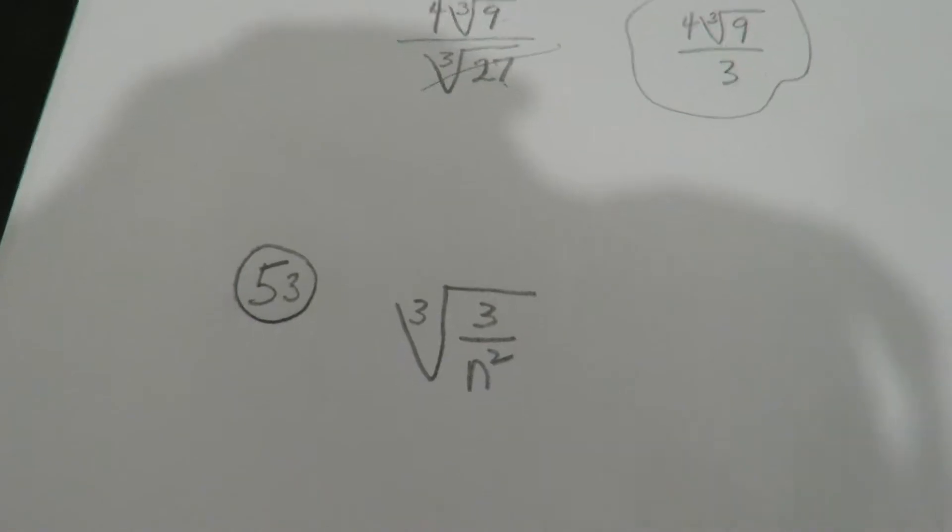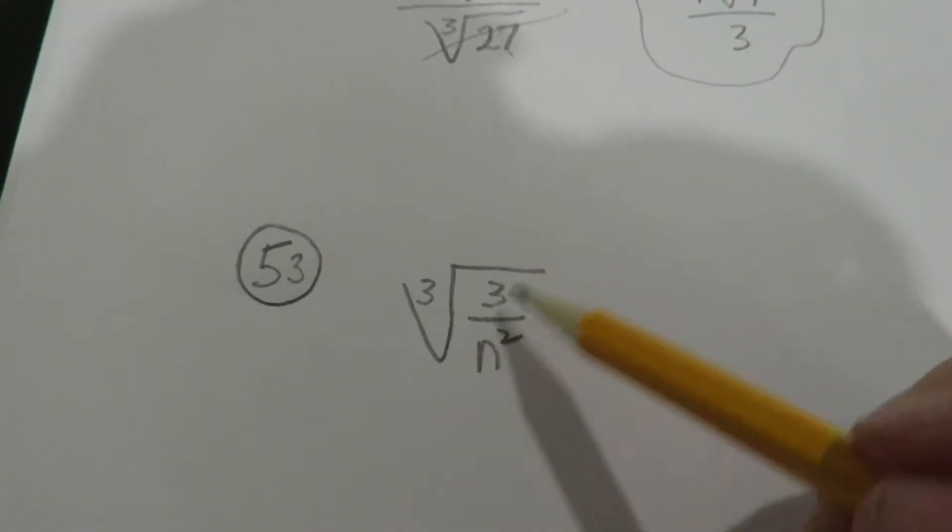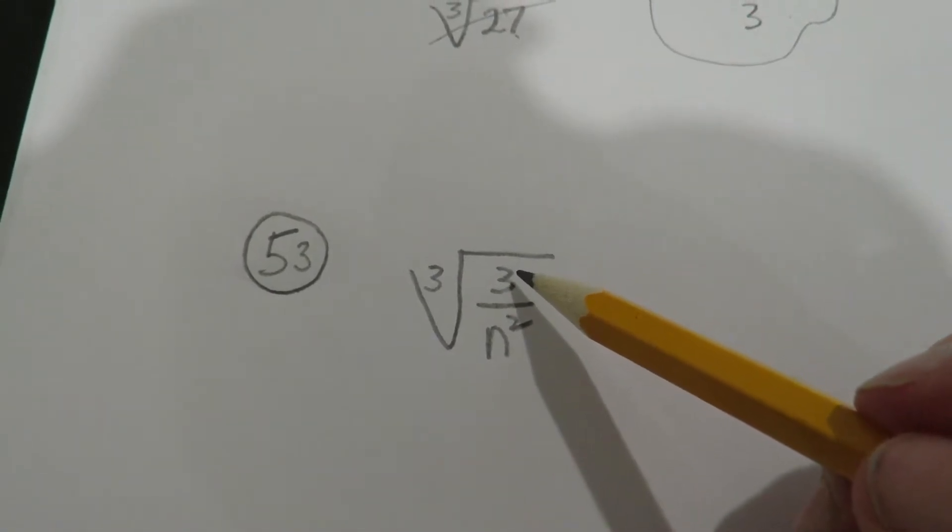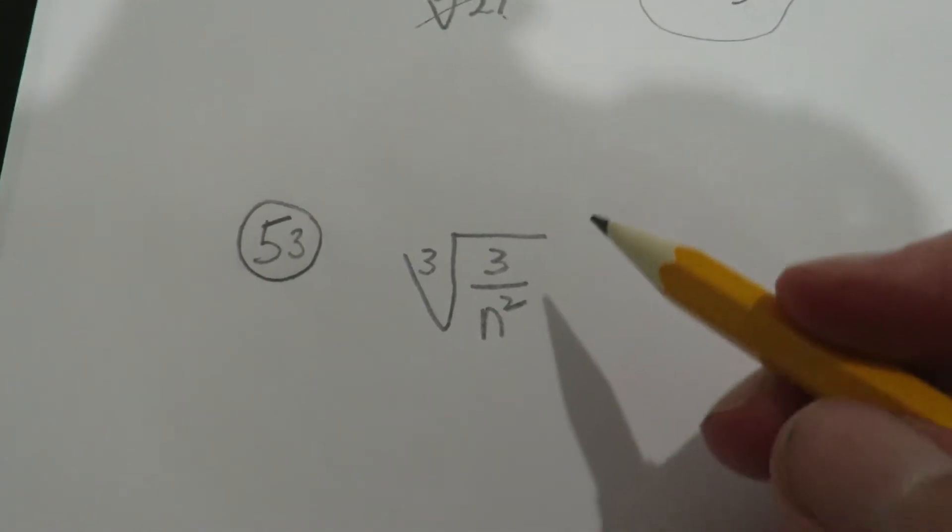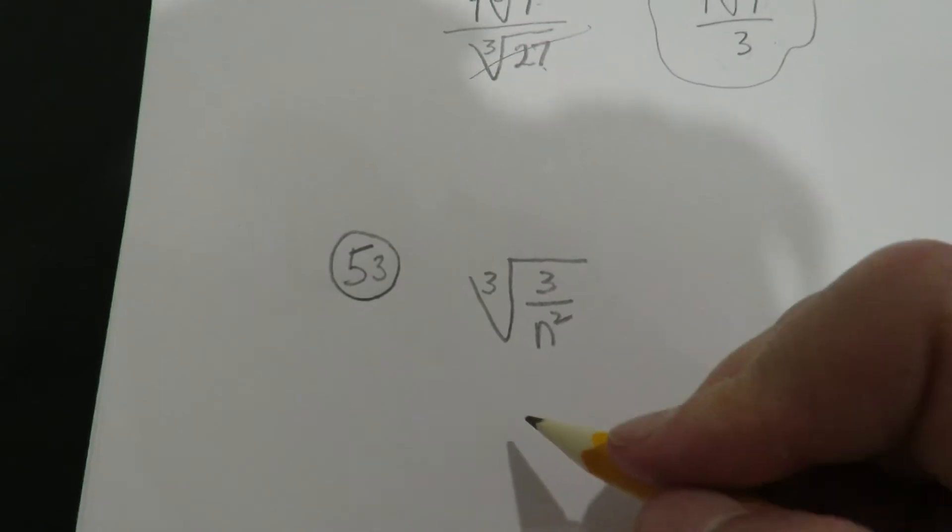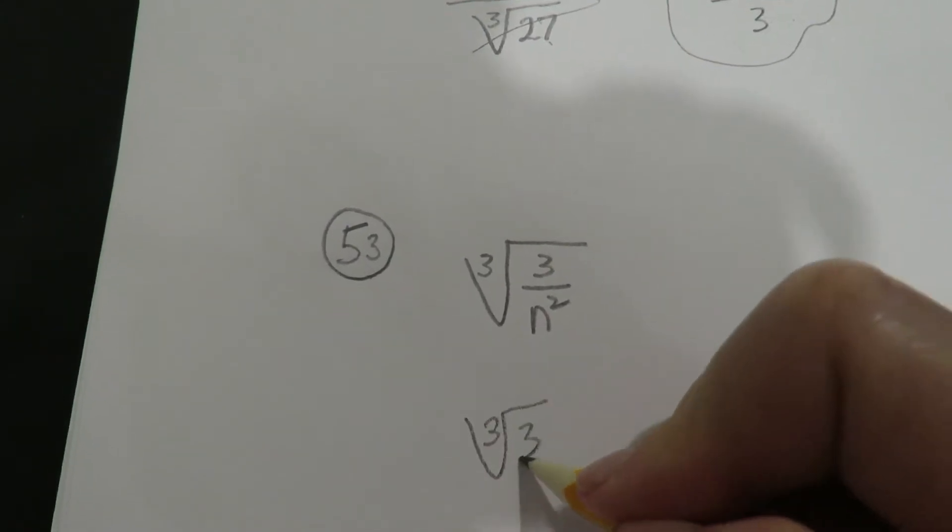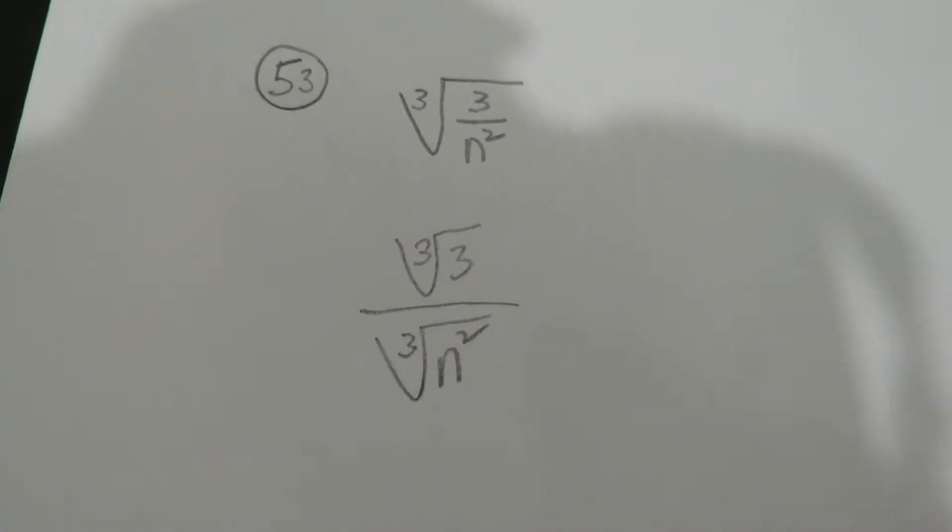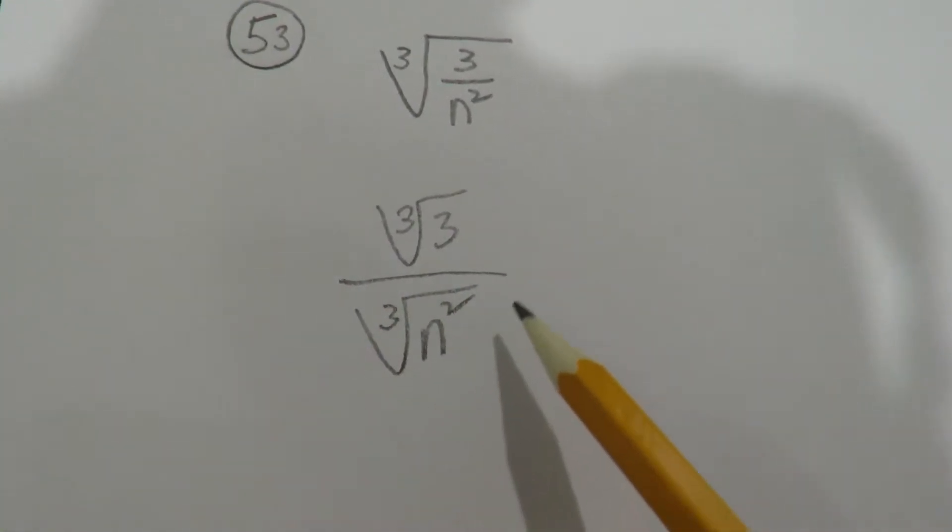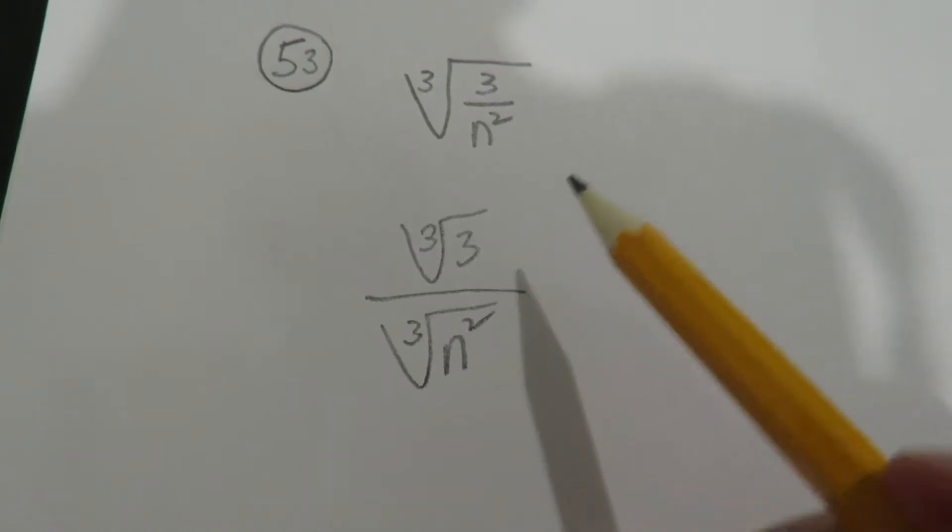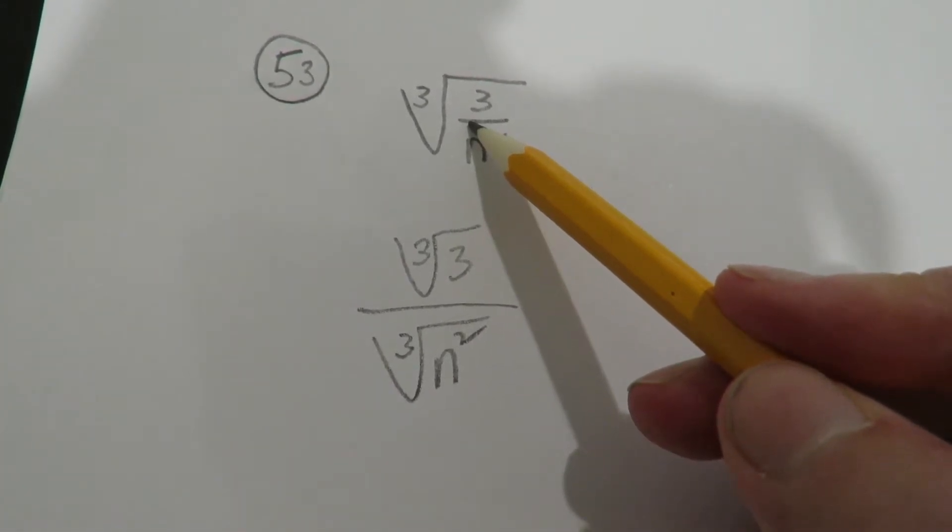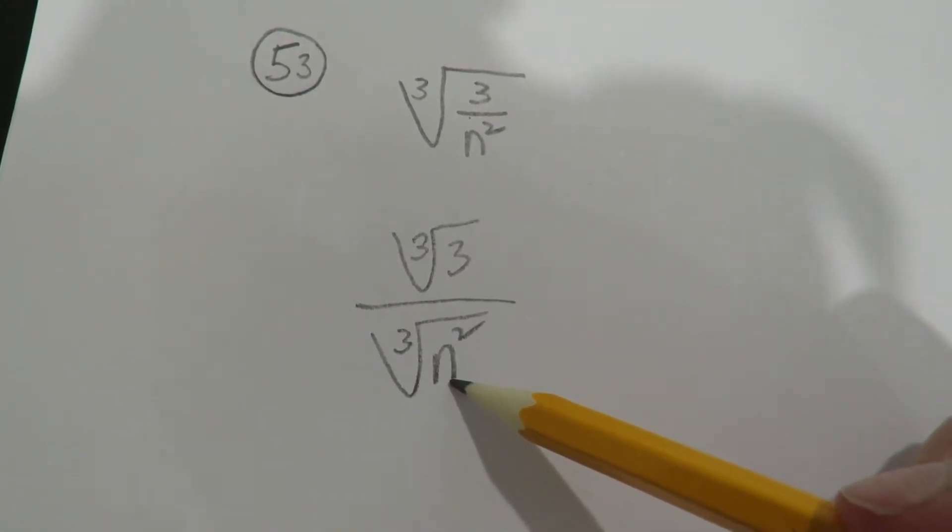Alright, let's try that again. Number 53. So what the problem is, is final answers cannot have fractions under the radical, and they cannot have radicals in the denominator. So sort of the first step that your brain does is this step. Okay, you put the fraction in two parts. Now again, you cannot have a radical in the denominator, and you can also not have a fraction under the radical. So this form is not considered complete, and this form is not considered complete.